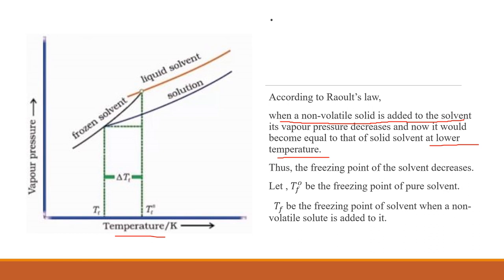In the graph, the pure liquid solvent has a higher vapor pressure, which increases with increase in temperature. When a non-volatile solute is added to form a solution, the vapor pressure of the solution decreases compared to that of the pure solvent.